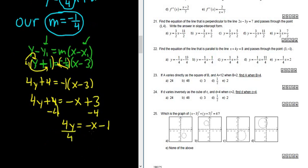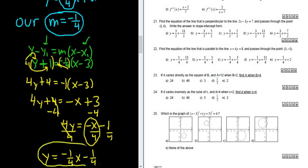And the last thing to do is divide everything by 4. So we end up with y equals, again, this piece here can be written as negative 1 fourth x, and then minus 1 over 4. And that should be the final answer.